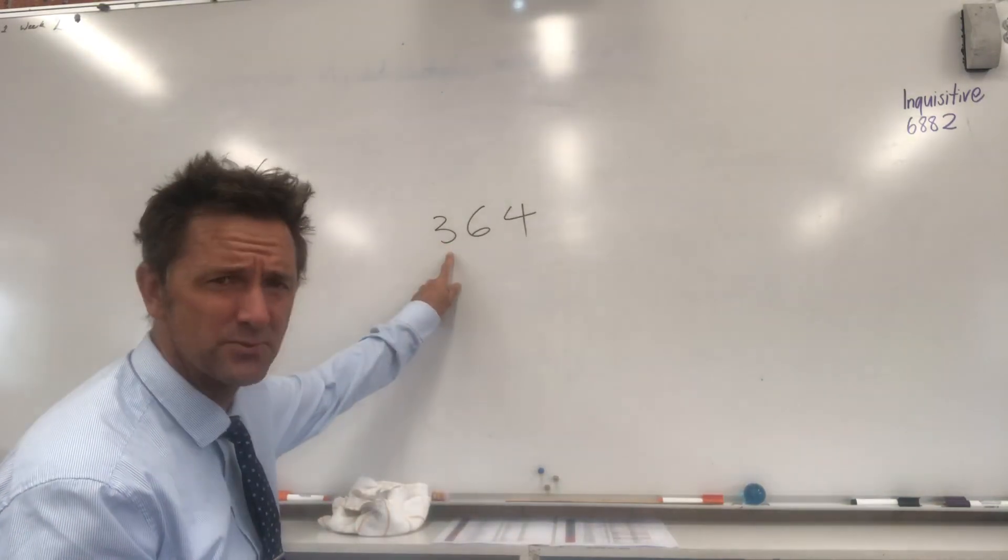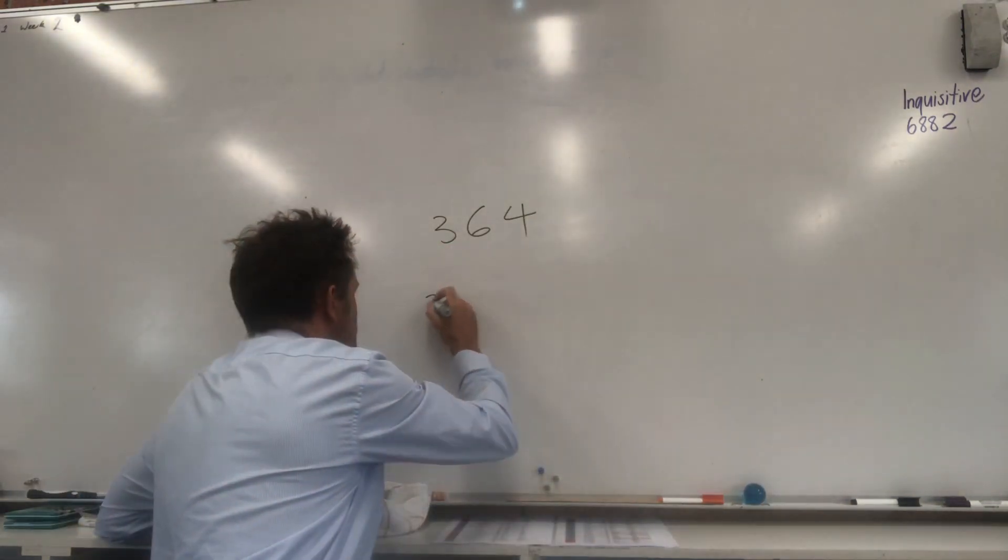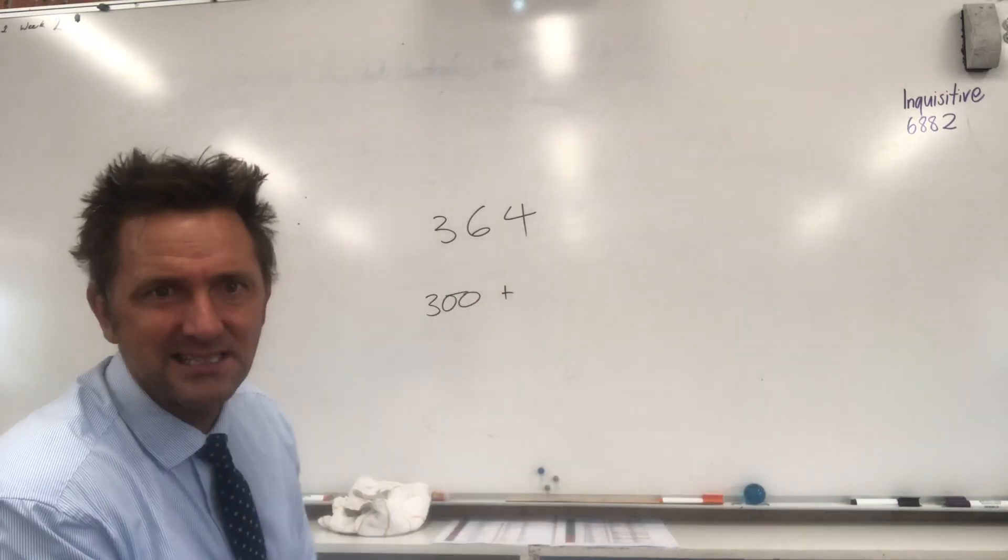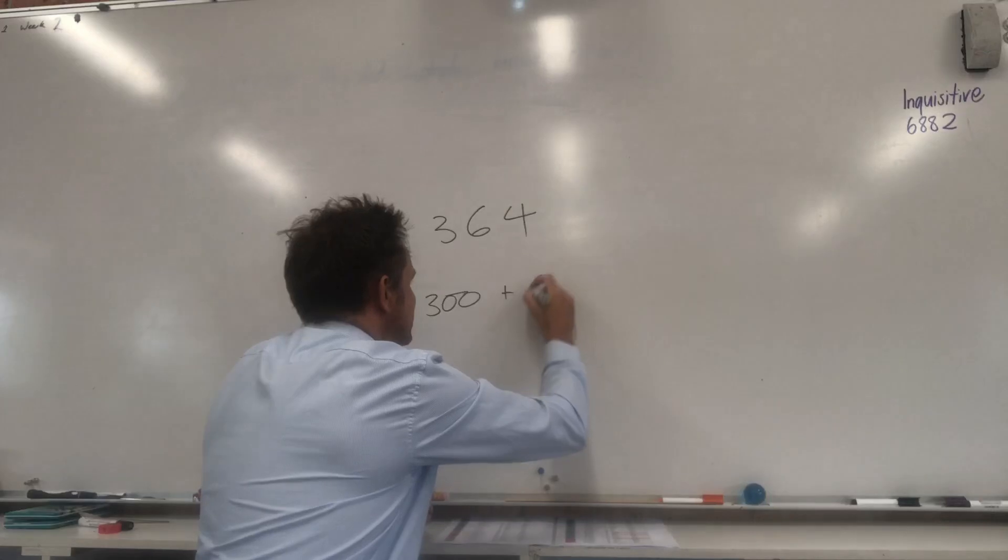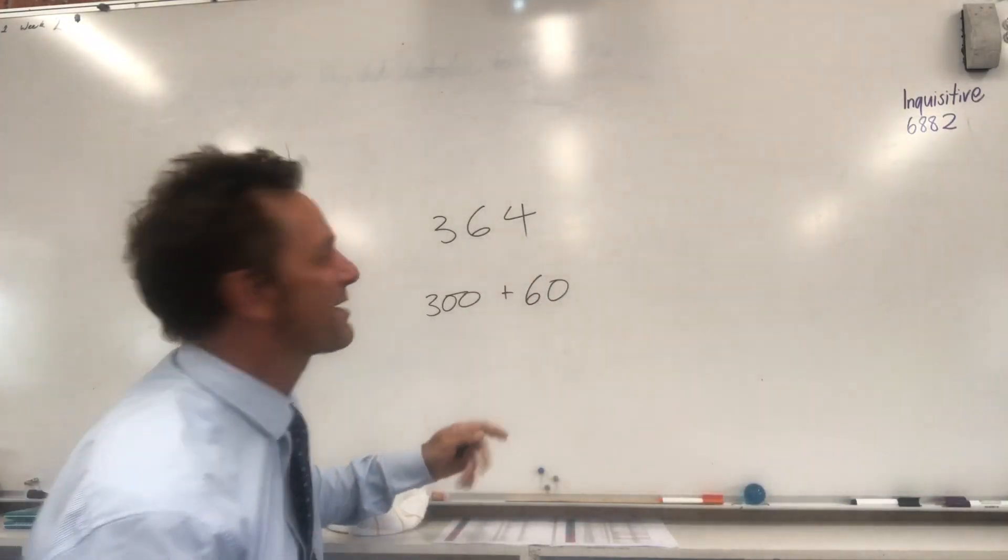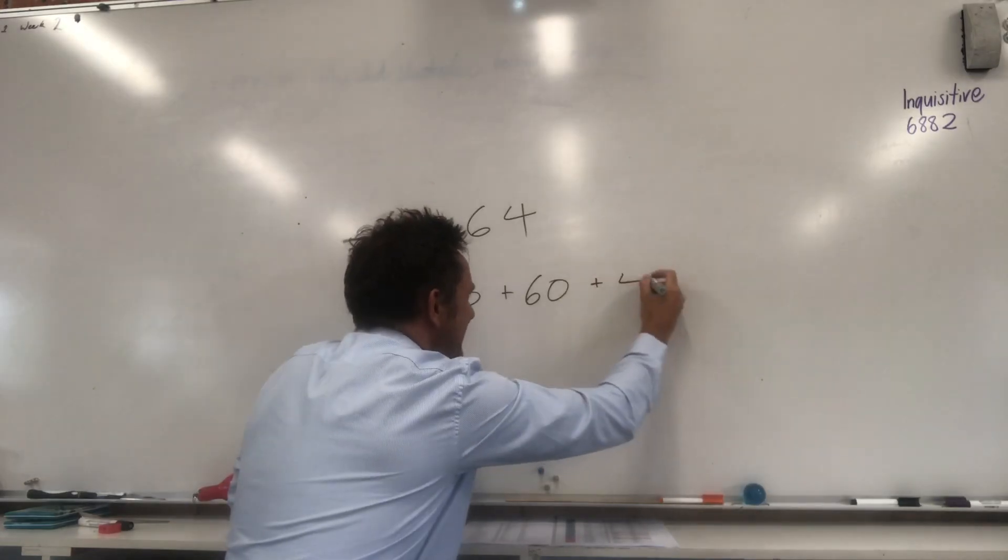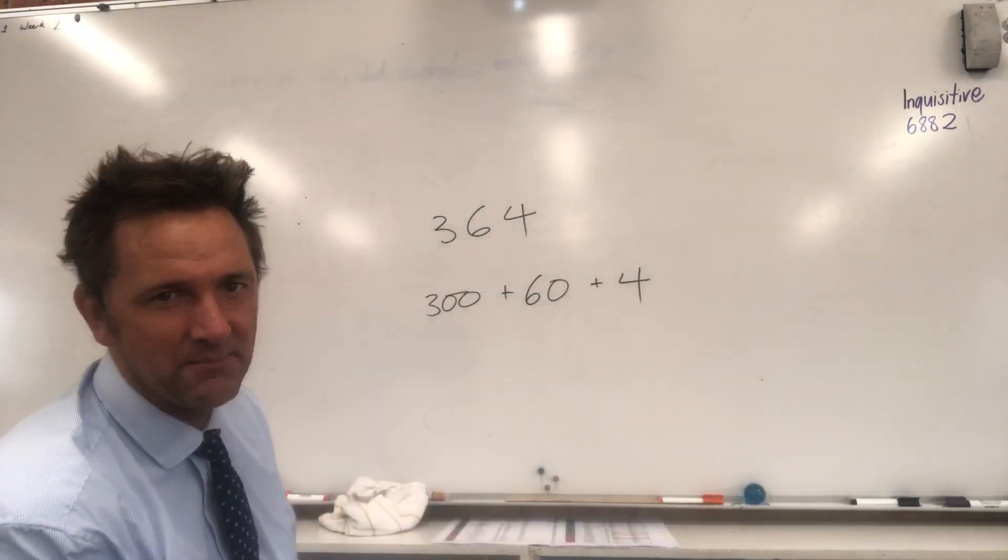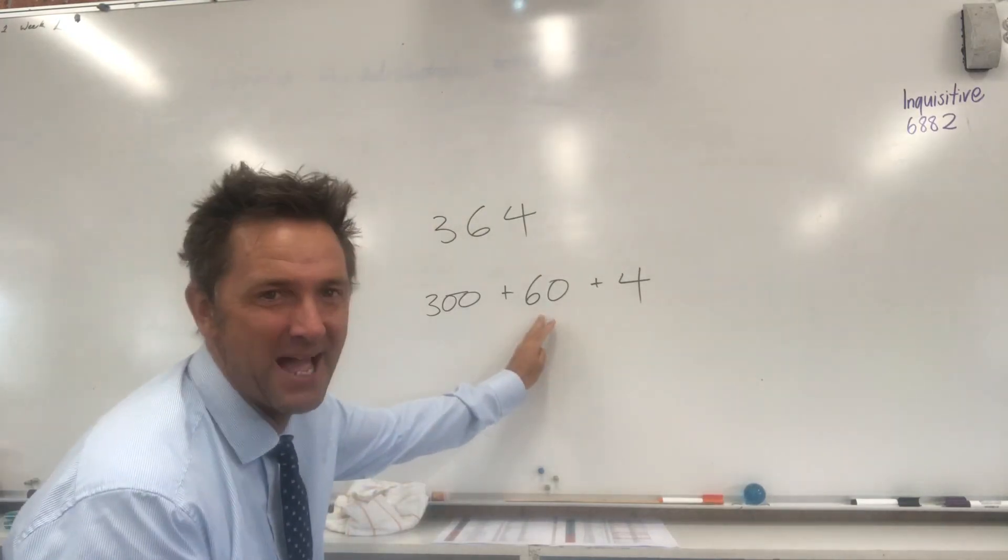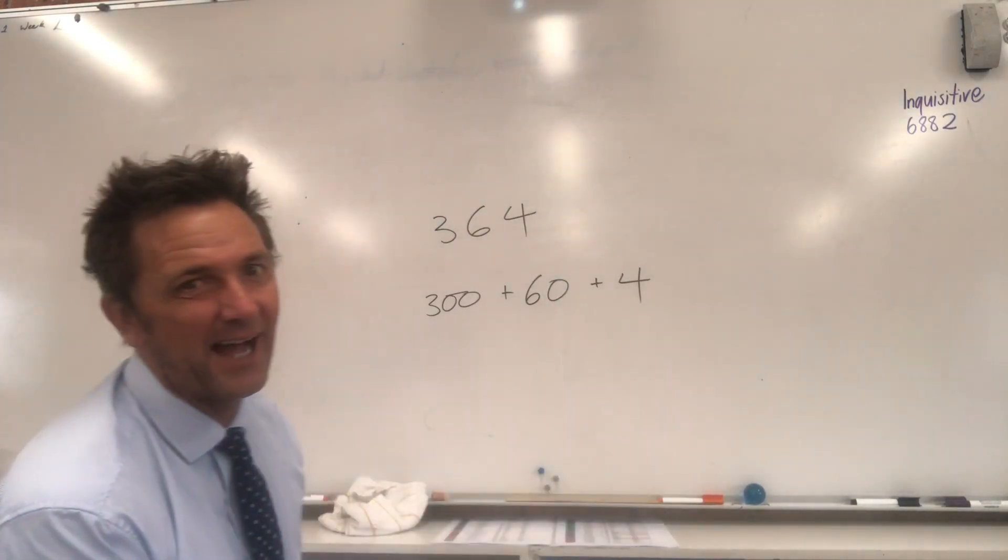And then we're going to expand it out. Because remember, this 3 is really a 300, so it becomes 300 plus. This 6 is really 60, becomes 60 plus. And this 4 is actually 4. So that's what I mean when we say expanding numbers. We actually show how many hundreds, how many tens, and how many ones or units are in that number.